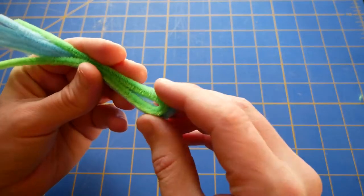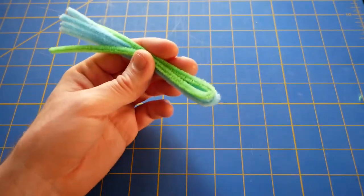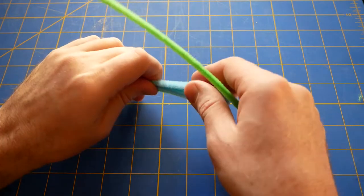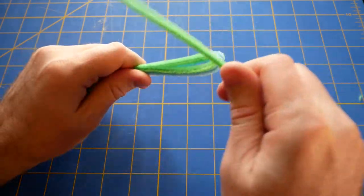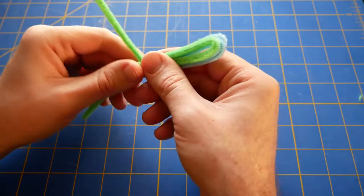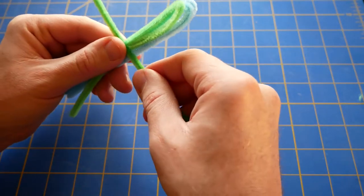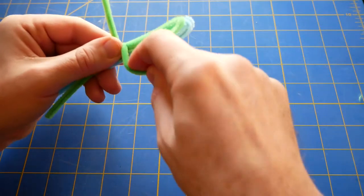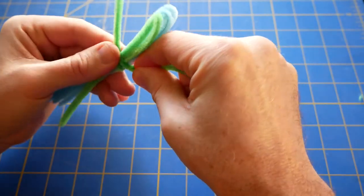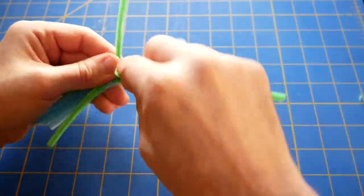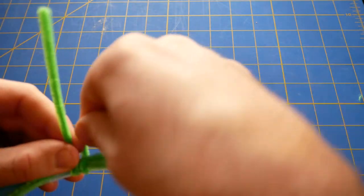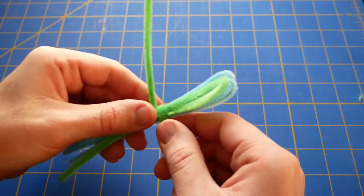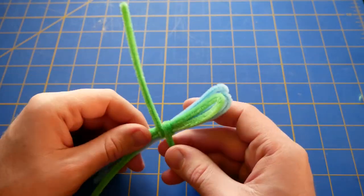So you have three loops on the end. Then right about here on the praying mantis, you want to take a new pipe cleaner and wrap it around the middle to hold your bundle pretty tight, like that.